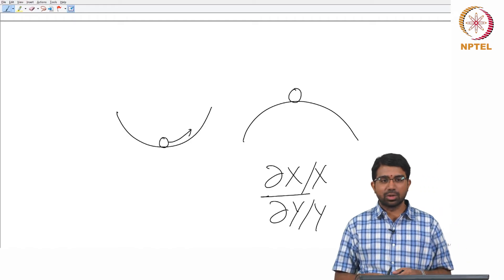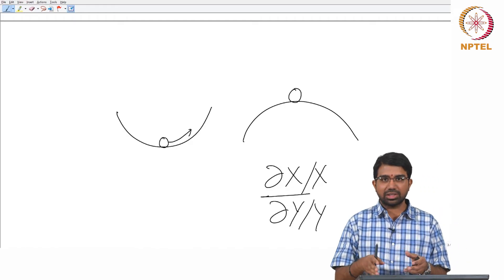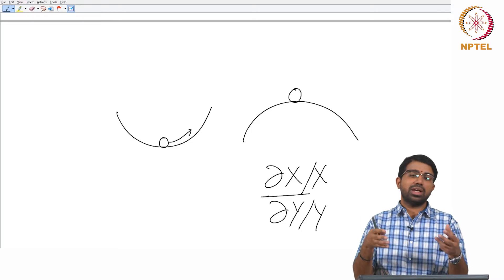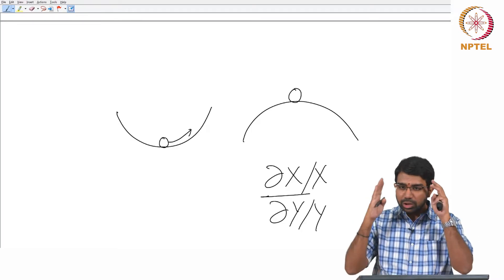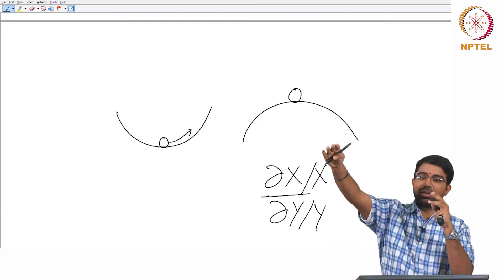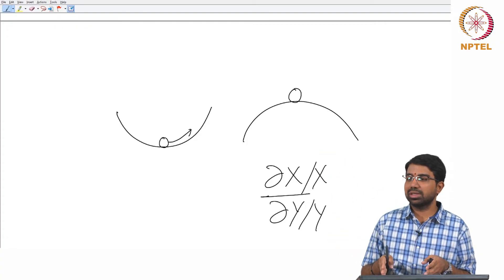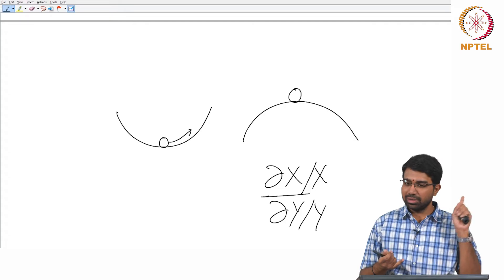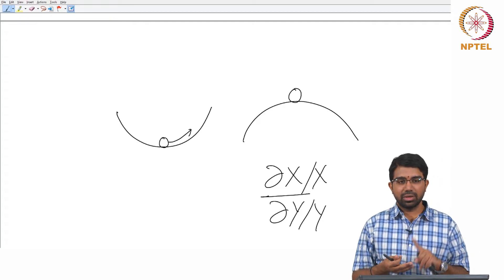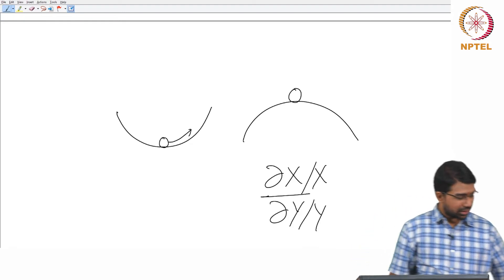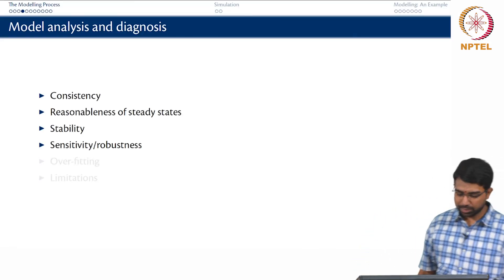You will look at all these in greater detail as we go on but the purpose of this lecture is to introduce you to what kinds of things one worries about while building models. And it is good to be aware of this whole thing when you start the modeling exercise itself. Am I going to be able to test for stability? Is my model sensitive enough? Do I have good data? All these kinds of things one has to start worrying about.